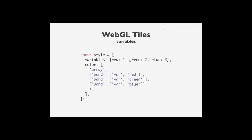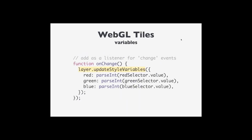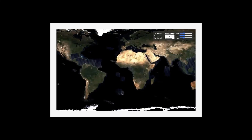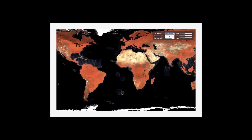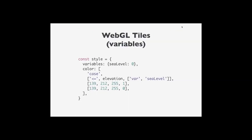You don't have to do only static renderings — you can configure variables and let the user control which bands go in which channels. As the user changes elements in the UI, you can change which bands are displayed. For example, generating a false color composite and letting the user do contrast stretching.